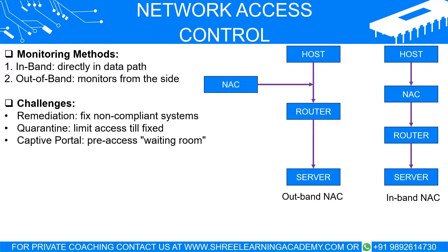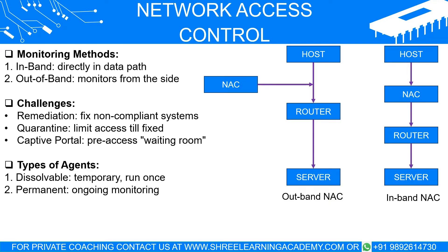Addressing the challenges. Remediation and quarantine: if a device doesn't meet the security rules, NAC can either quarantine it — limiting its access until it's fixed — or guide it through remediation, which means steps to fix the problem. Captive portal: think of this as a waiting room; before getting full access to the network, users might have to go through a portal where they must enter credentials or accept terms and conditions. Types of agents — dissoluble and permanent: dissoluble agents run once and then disappear, like temporary passes; permanent agents are ongoing, like having a permanent ID badge.